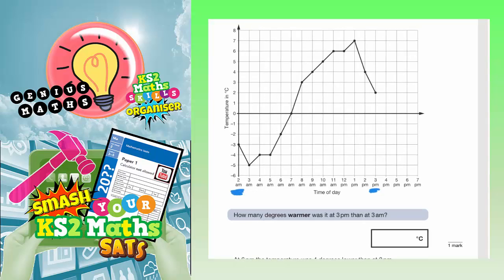How many degrees warmer was it at 3pm than 3am? Well, 3am is here, so if we follow it up to the point on the graph, it's this dot here, which is level with minus 5.